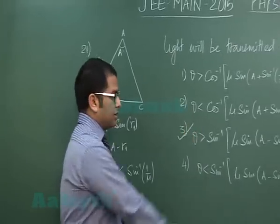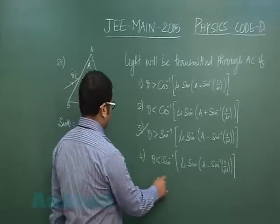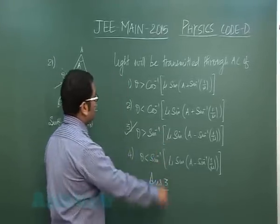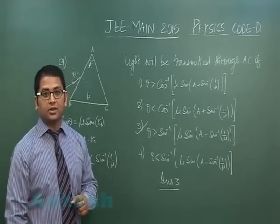On playing with the simple relation, you would come to the conclusion to option number 3. So for this particular question, question number 21, the correct option is third, and this will allow us to go to question number 22 now.